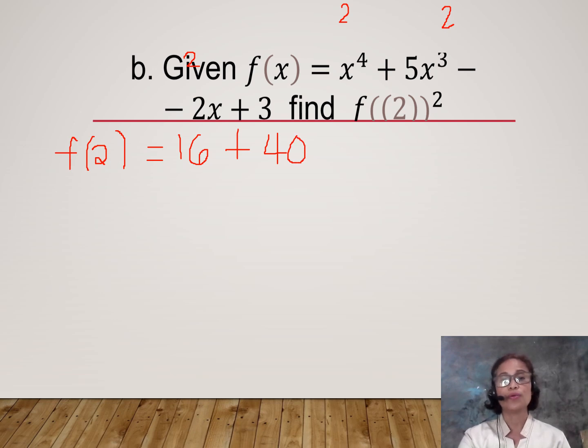Then 2 times negative 2 is negative 4, and then you have plus 3. We combine first 16 and 40 which is 56, plus 3 is 59, minus 4 is 55. So this is the value of f(2).